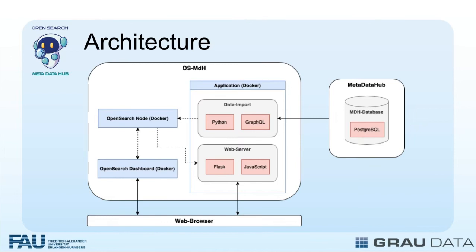At the core, we have the Metadata Hub developed by Graudata. This serves as a robust backend for data retrieval and forms the foundation of our software. To ensure seamless integration and efficient data management, we deploy three Docker containers. The first container runs an OpenSearch node and acts as the core for the powerful search engine.